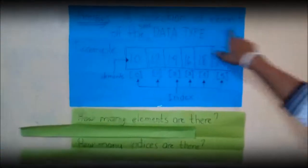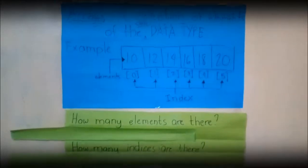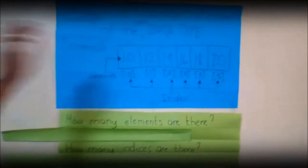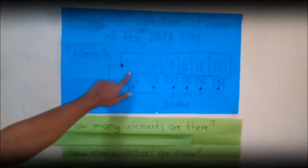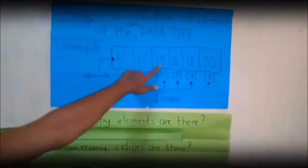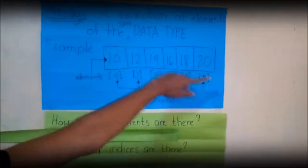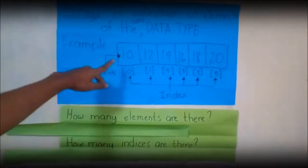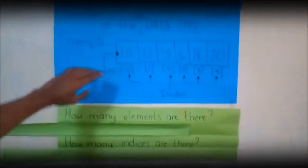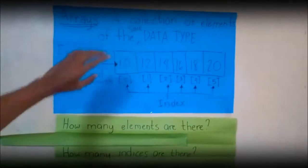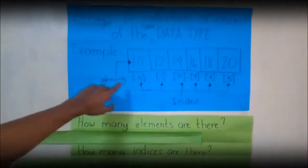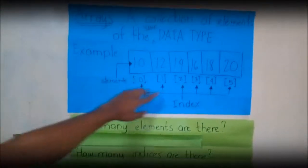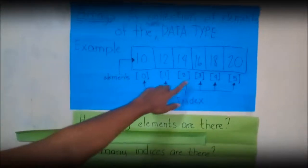What is the part of it? The elements: 10, 12, 14, 16, 18, 20. This represents the values of the array. Each box represents an index. The index is counted from 0, 1, 2, 3, 4, 5. So always remember that the index always starts with 0.